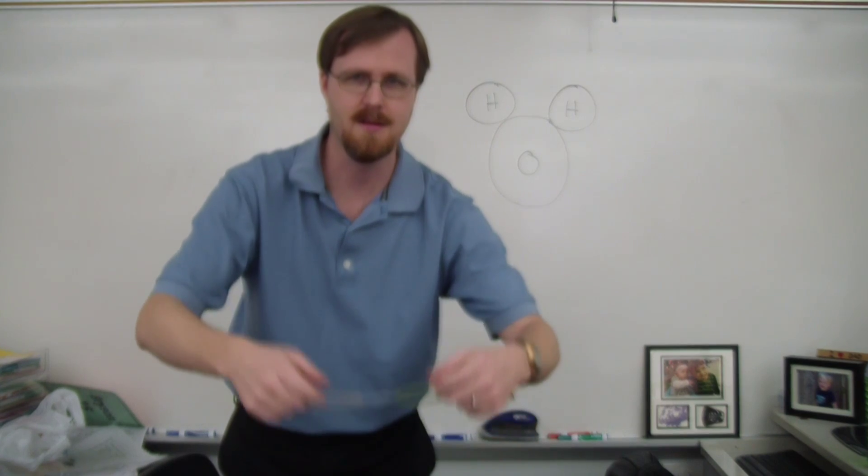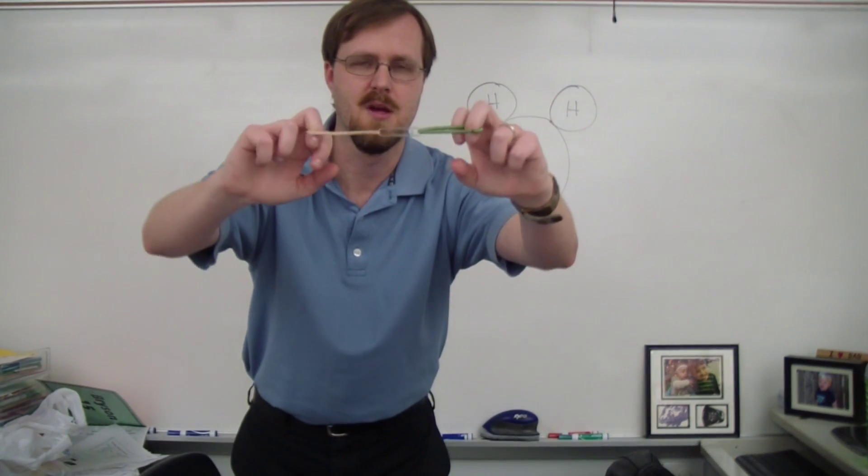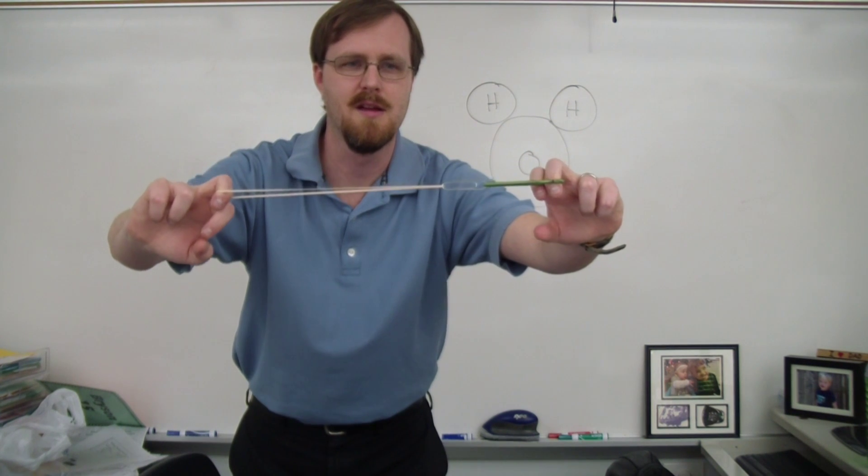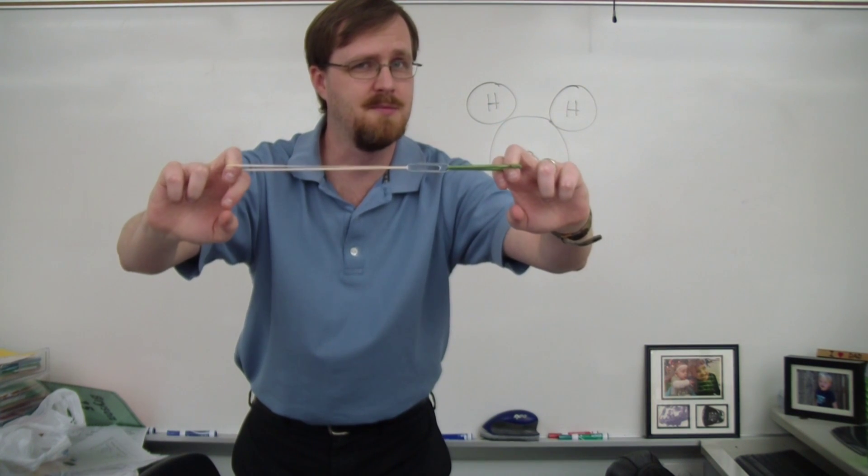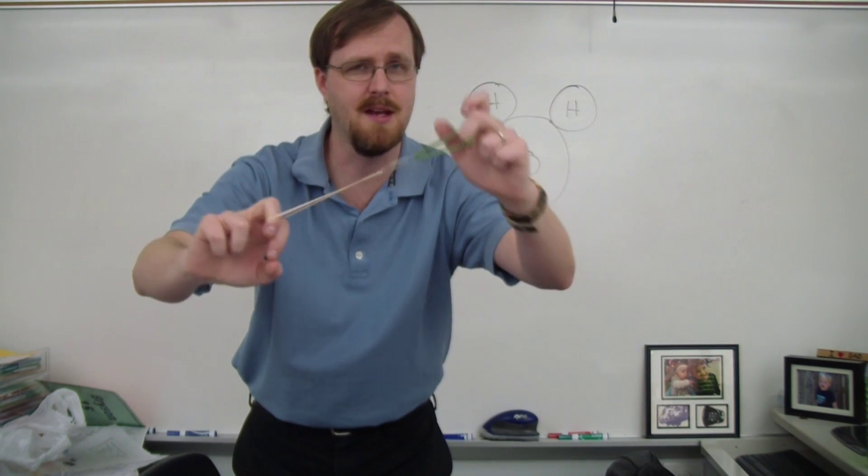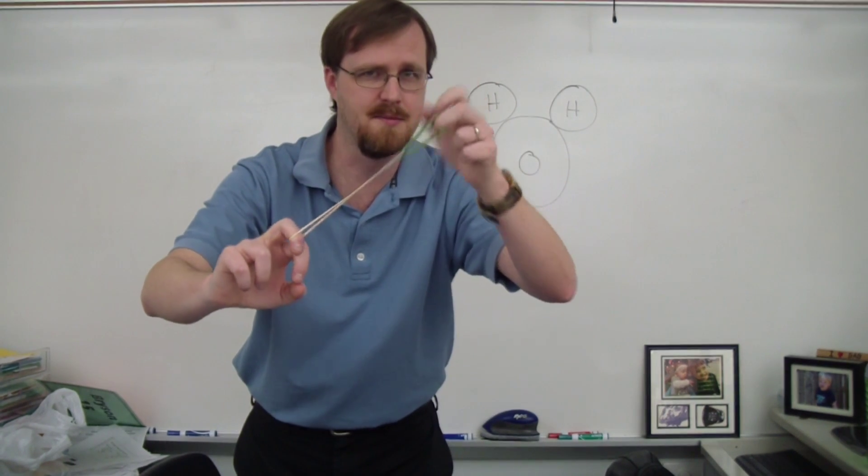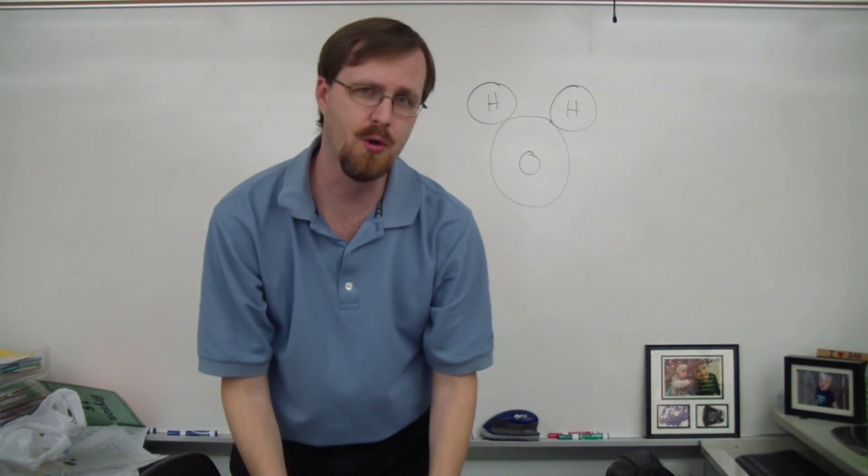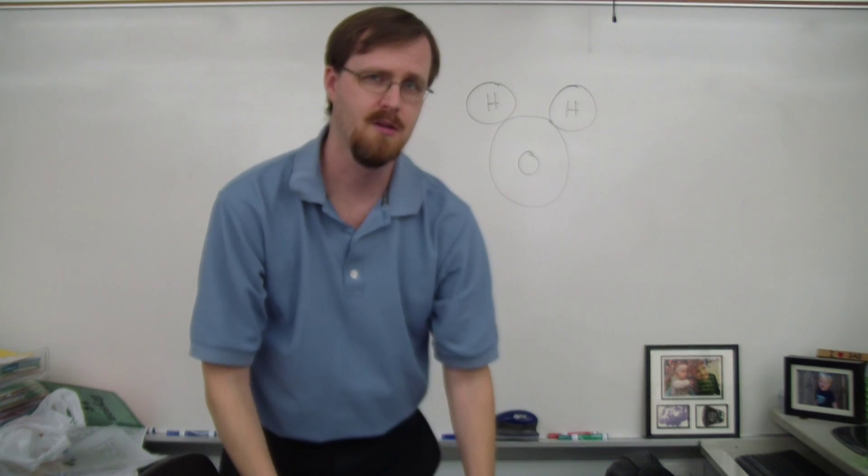Compare that to this. When I pull on it, you can very easily see that while this paper clip is being shared, it is an unequal sharing because it's spending more time around this band than it is around this band. So this is what a polar covalent compound looks like.